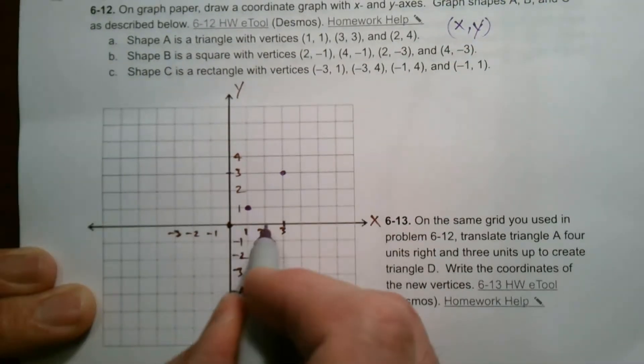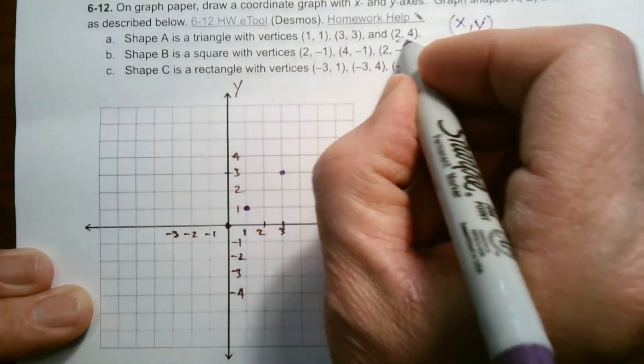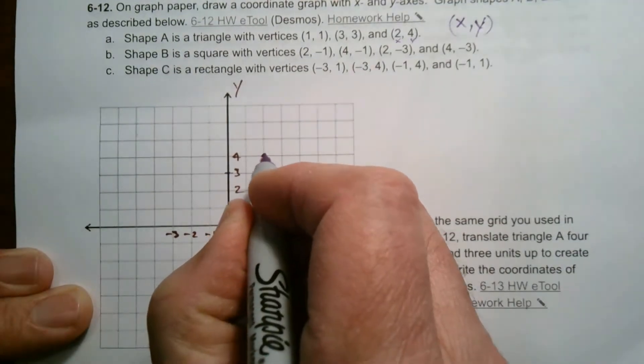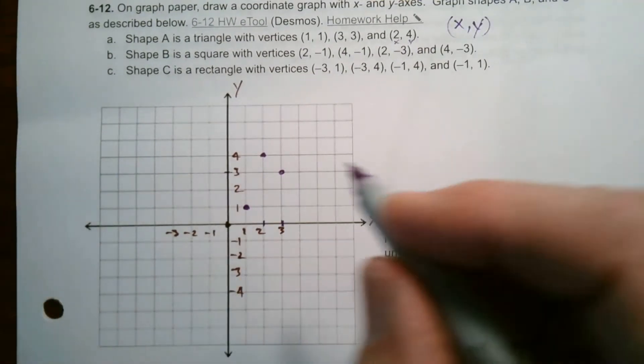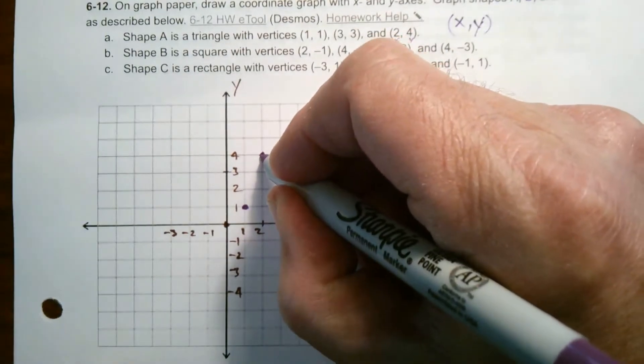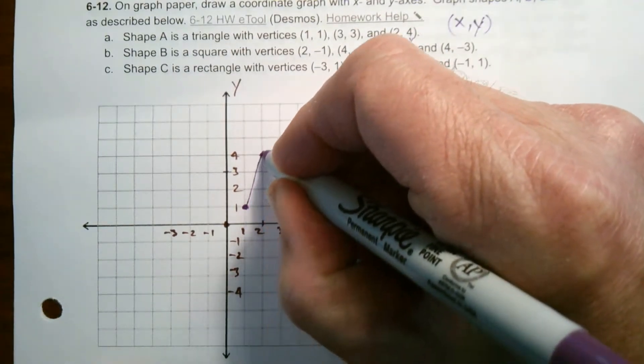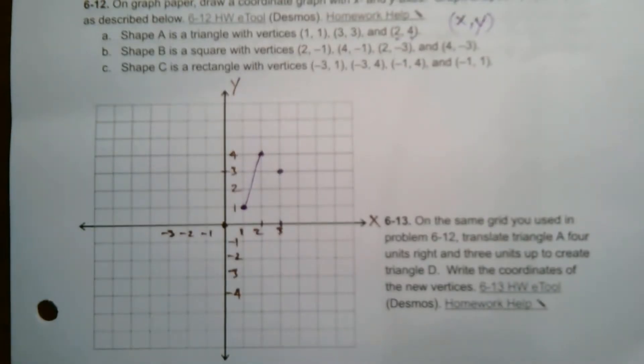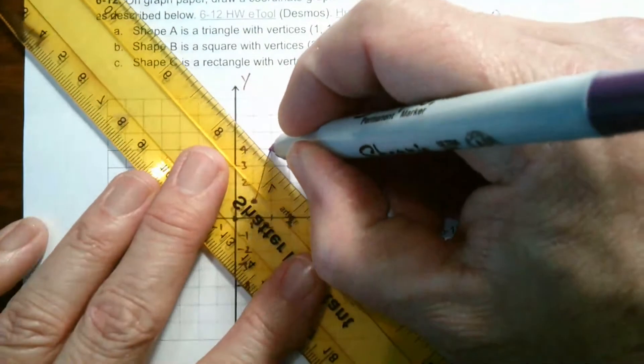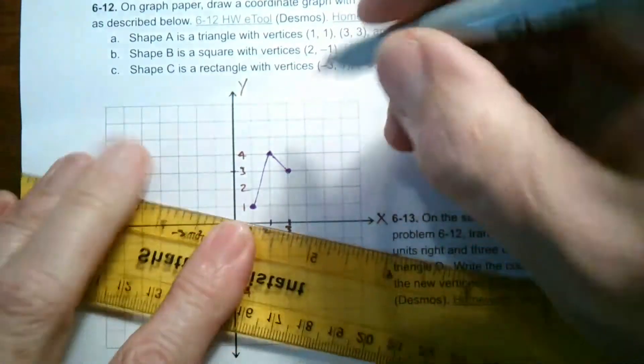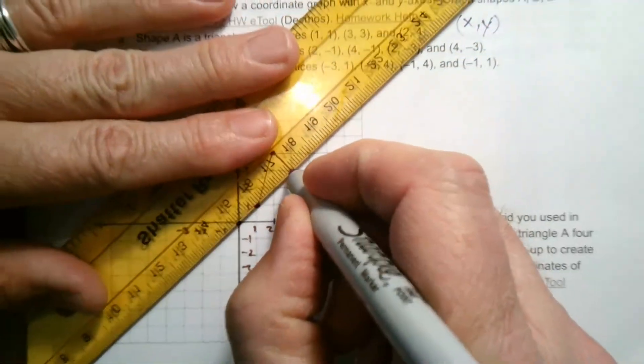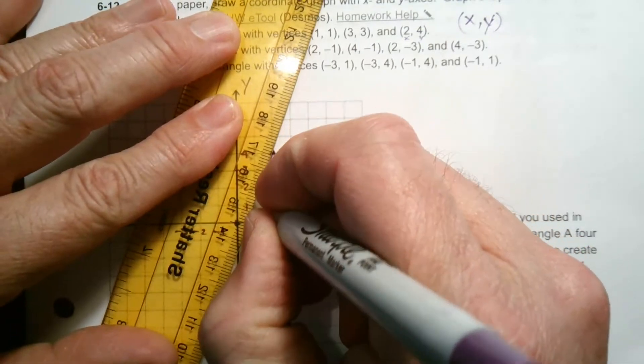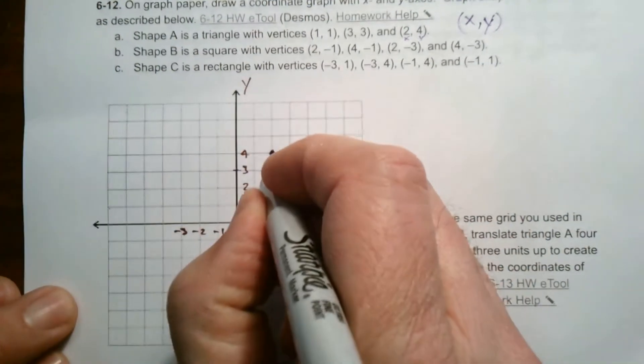And then two, four is where the x is two, right? x, y. So two, and then four right there. So this would be my triangle. So then I'd want to connect my vertices, do my best to draw nice straight lines. Might be helpful to actually get a ruler out. I'm going to do that. A little ruler to make sure my points are nice and straight. My lines are straight, connected.